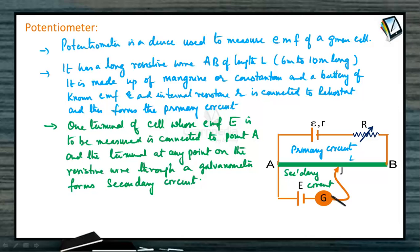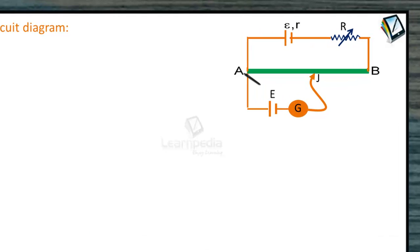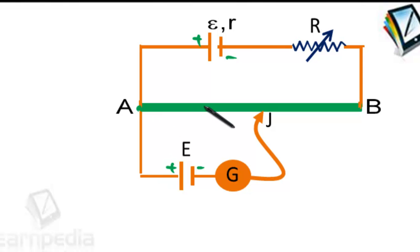So there are two circuits in a potentiometer. The first is the primary circuit, where the battery of known EMF is connected. The secondary circuit contains the battery whose EMF we want to calculate. The positive terminals of both batteries are connected to point A.